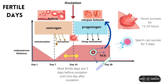The ovum, once out of the follicle, can only survive for up to 24 hours, whereas sperm is able to survive for up to 5 days. So the window of conception starts from 5 days before ovulation until 1 day after ovulation.